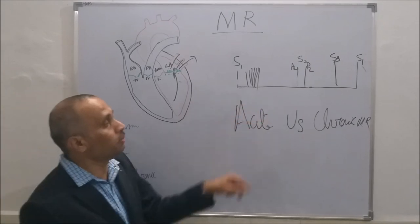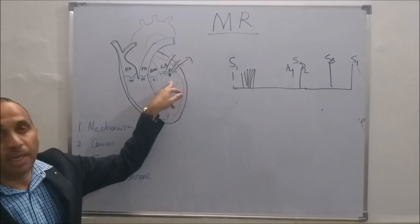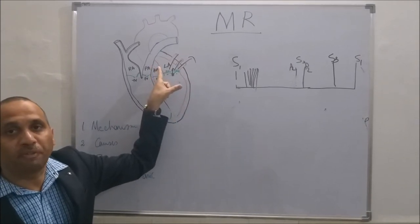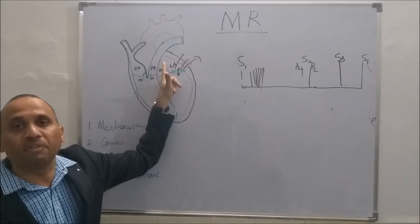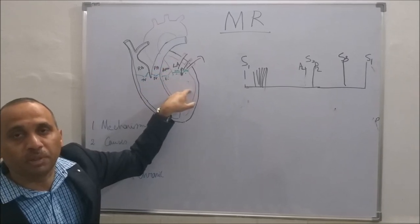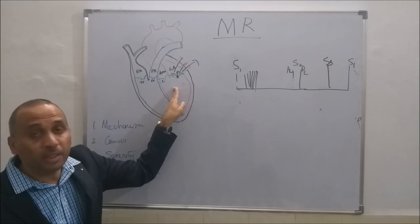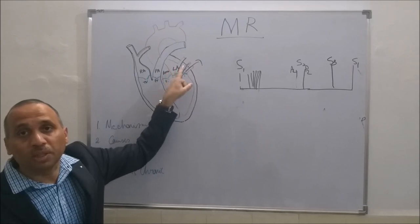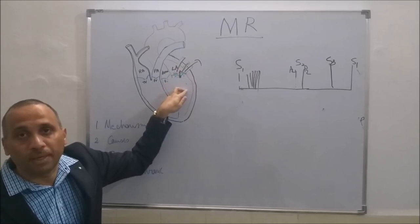So understand the murmur and pathology of MR. What is the management? The blood is going from the LV to the LA instead of the aorta. So our endeavour is to encourage more blood to go towards the aorta. How do you encourage that? You give peripheral vasodilators so that you decrease the resistance offered by the aorta to the LV, so that more blood from the LV goes to the aorta. So vasodilators like ACE inhibitors or hydralazine are given in MR, so that blood goes towards the aorta rather than to the left atrium. Vasodilators form the main part of the treatment in mitral regurgitation.